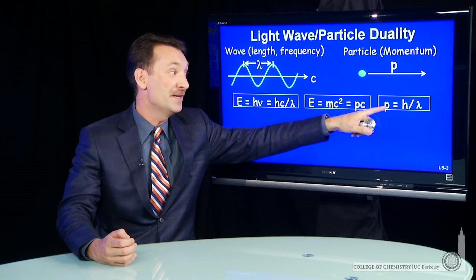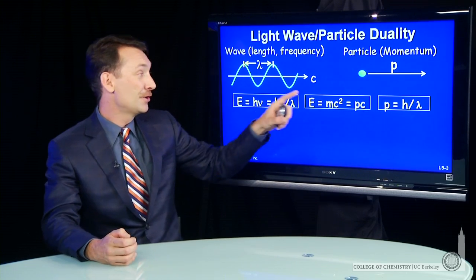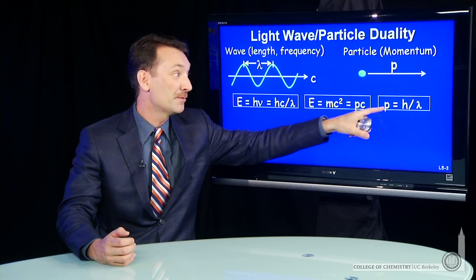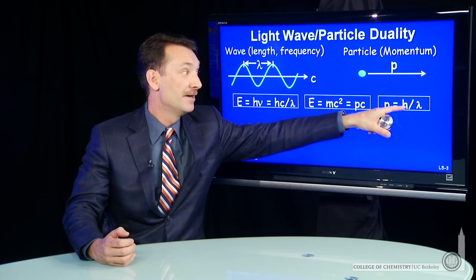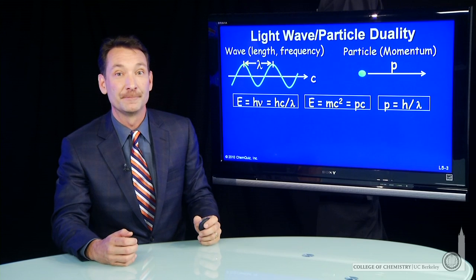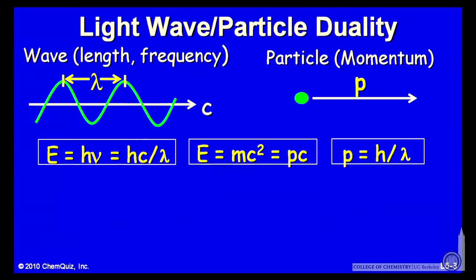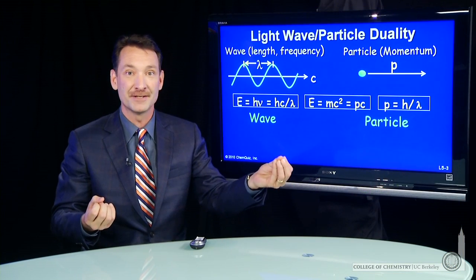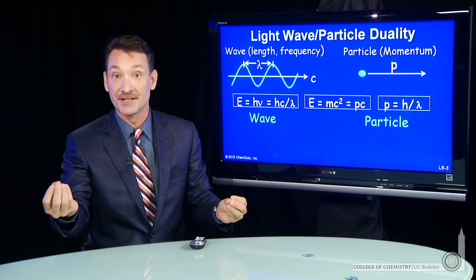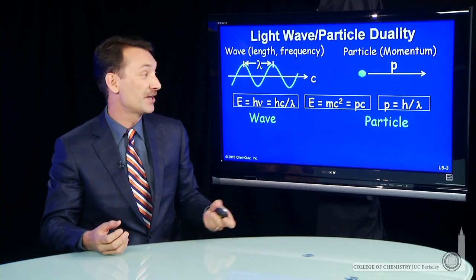So what we can do is write the momentum in terms of these two energies. And we'll find the momentum is Planck's constant divided by the wavelength. So a simple relationship between the momentum and the wavelength, the particle characteristic momentum and the wave characteristic wavelength, both expressed at the same time.